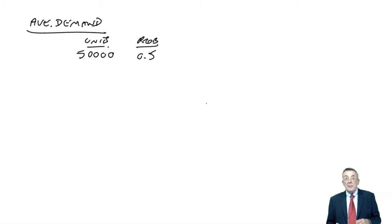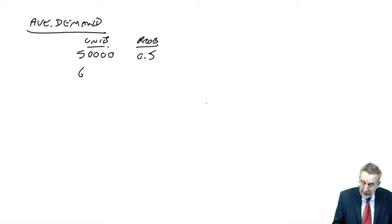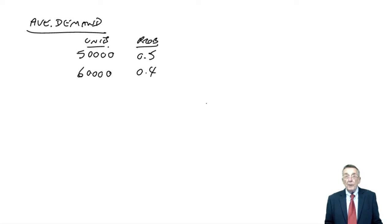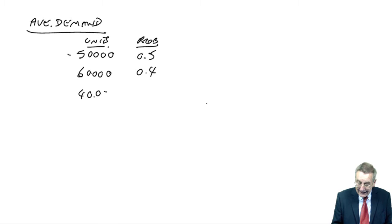Well, there's a probability of 0.4, it'll be 20% higher. Well, 20% of 50 is 10, so the demand might be 60,000, with a probability of 0.4. Or it may be 20% lower, 20% lower than 50 is 10, 40,000, probability of 0.1.